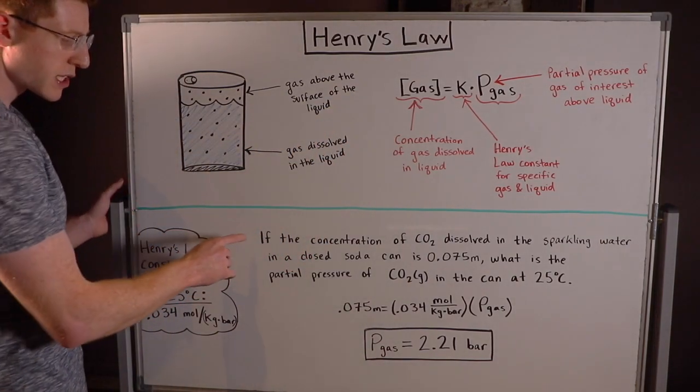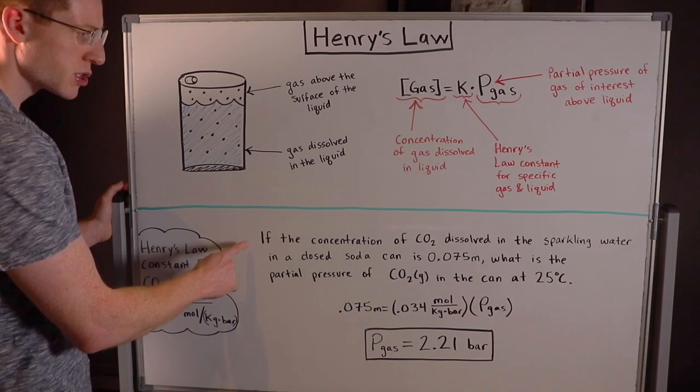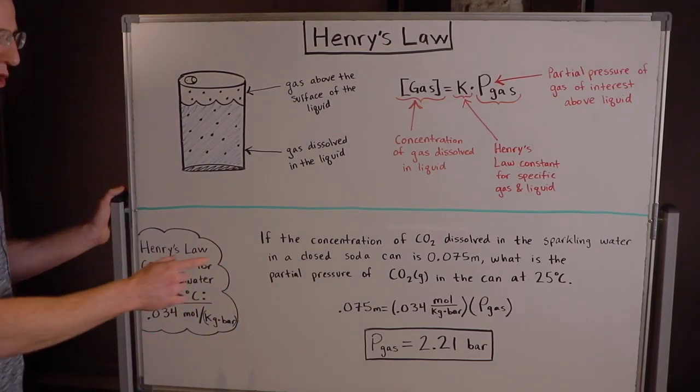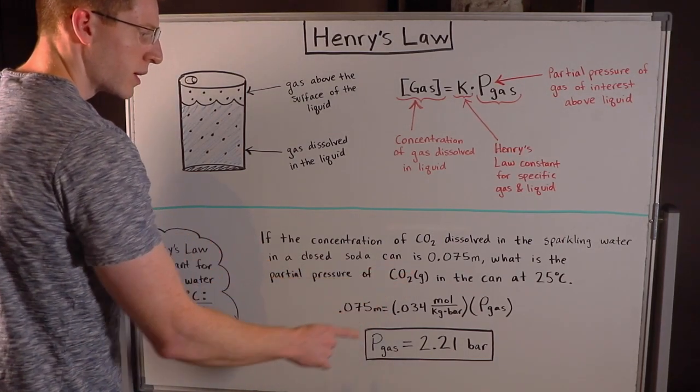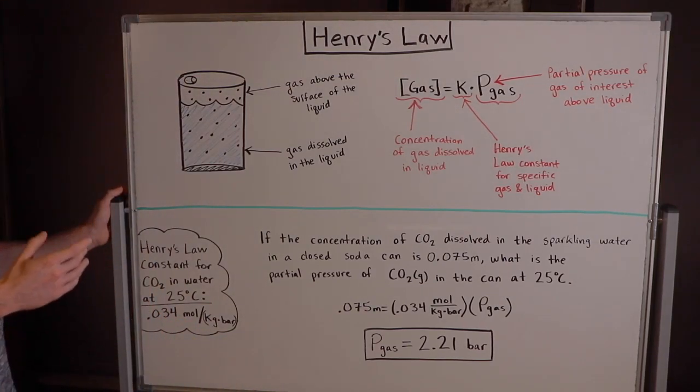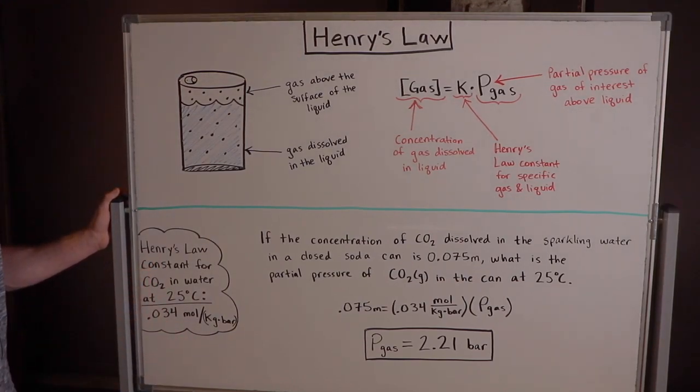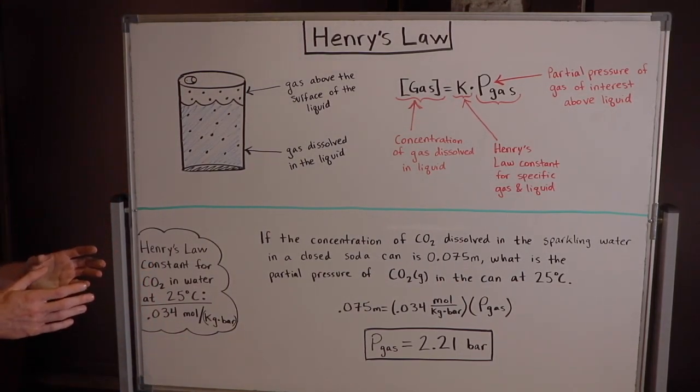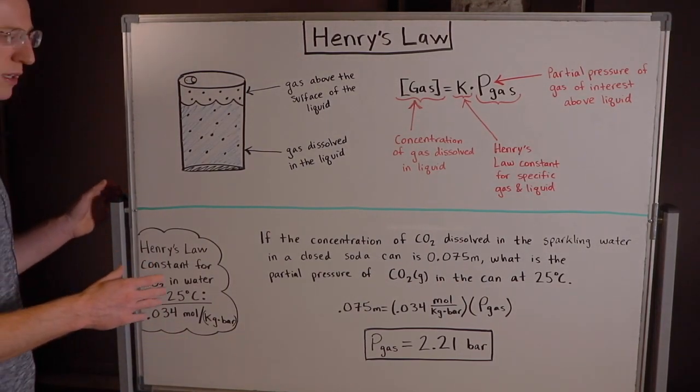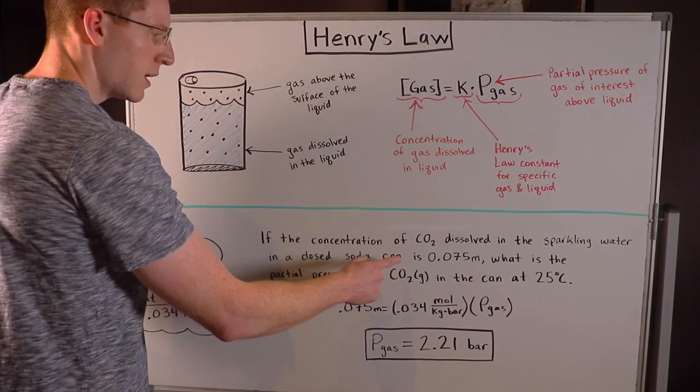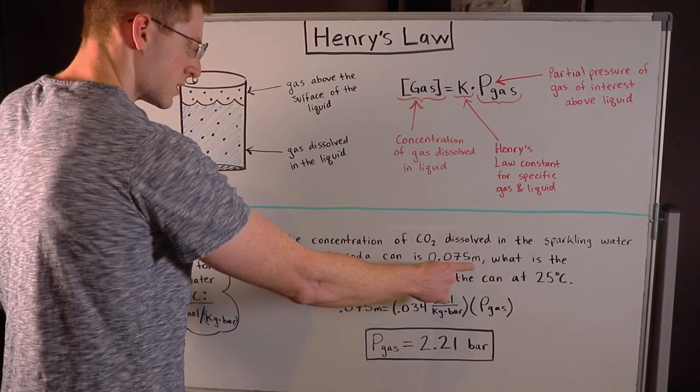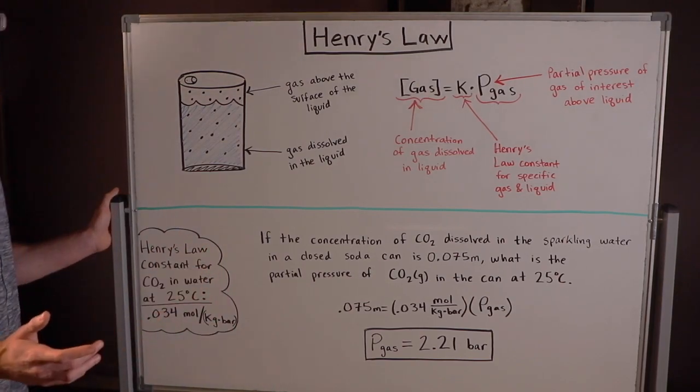Okay so let's do an example problem. If the concentration of CO2 dissolved in the sparkling water in a closed soda can is 0.075 molal, what is the partial pressure of CO2 gas in the can at 25 degrees Celsius. So this is clearly a Henry's Law problem because they're telling us about a gas dissolved in a liquid. They give us a concentration of the gas and then they're asking for a partial pressure of the gas.